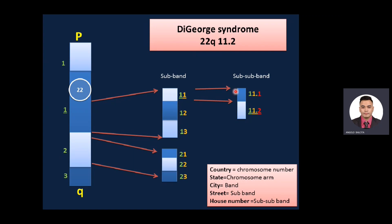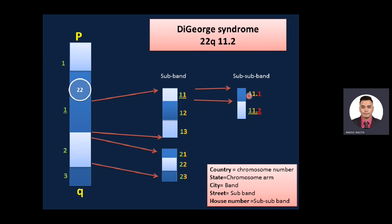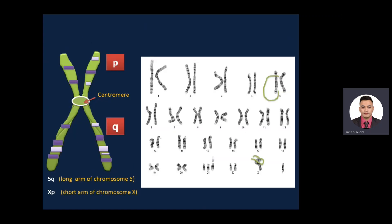If you take a band and magnify it further, it is classified into sub-sub-bands. For example, DiGeorge syndrome is a microdeletion in the long arm of chromosome 22, band 1, sub-band 1, sub-sub-band 2. The correct way to read this is: microdeletion in the long arm of chromosome 22, 1.1.2.